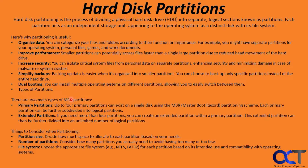When talking about MBR partitions, there are two main types. You have primary partitions — up to four of them. Each primary partition can be further subdivided into logical partitions. You also have extended partitions: if you need more than four partitions, you create an extended partition within a primary partition, and that extended partition can then be divided into logical partitions. So it goes primary, extended, logical — we'll show a sample of that in the demonstration.